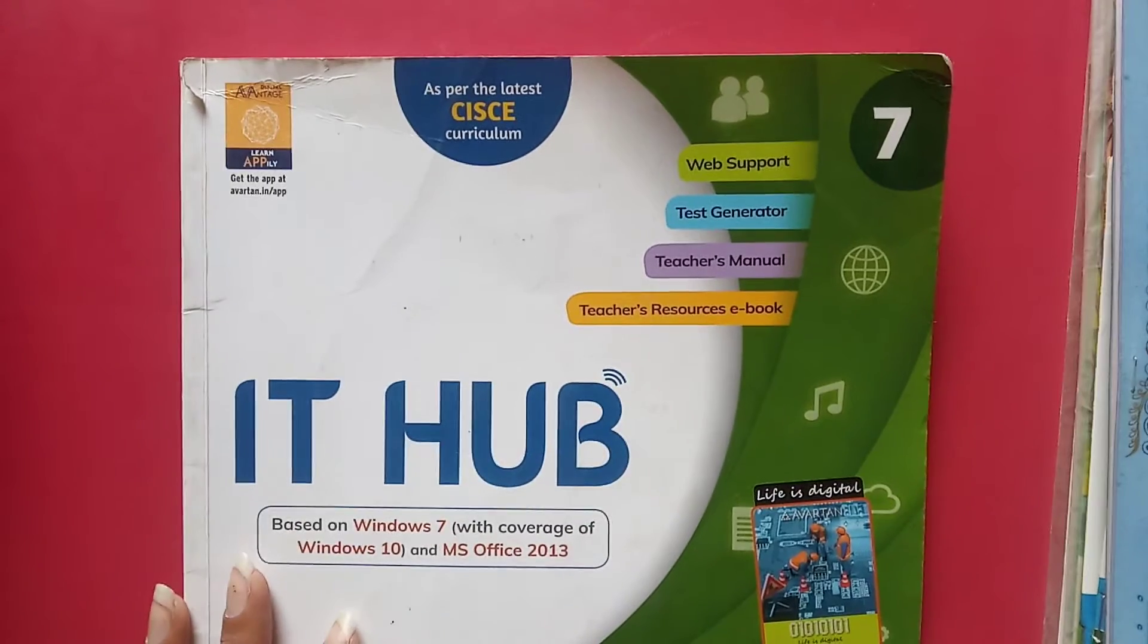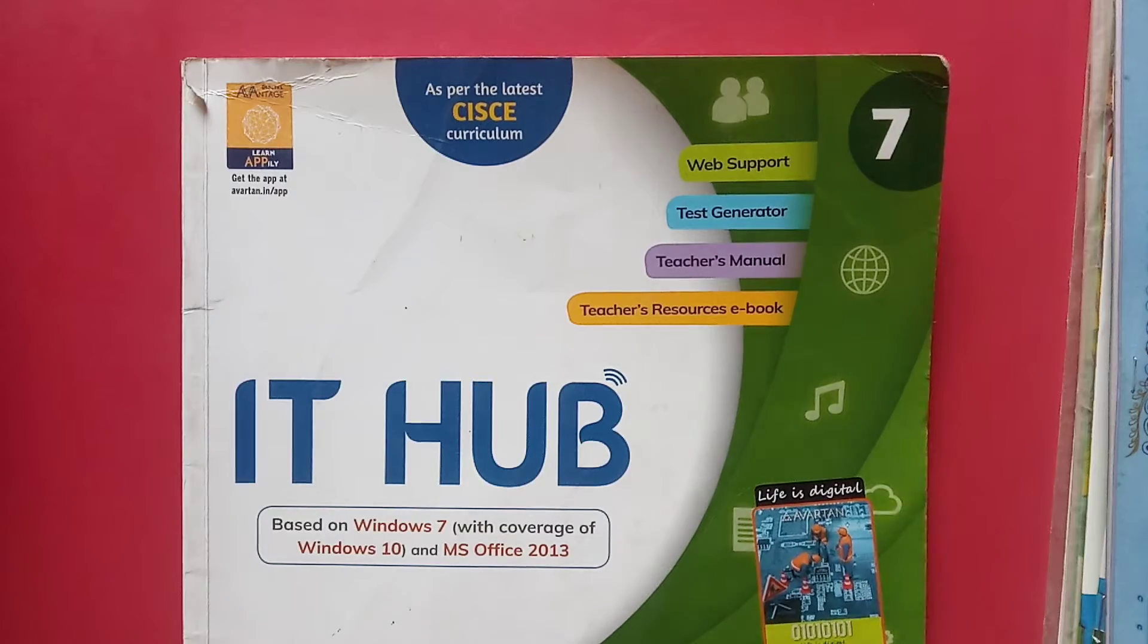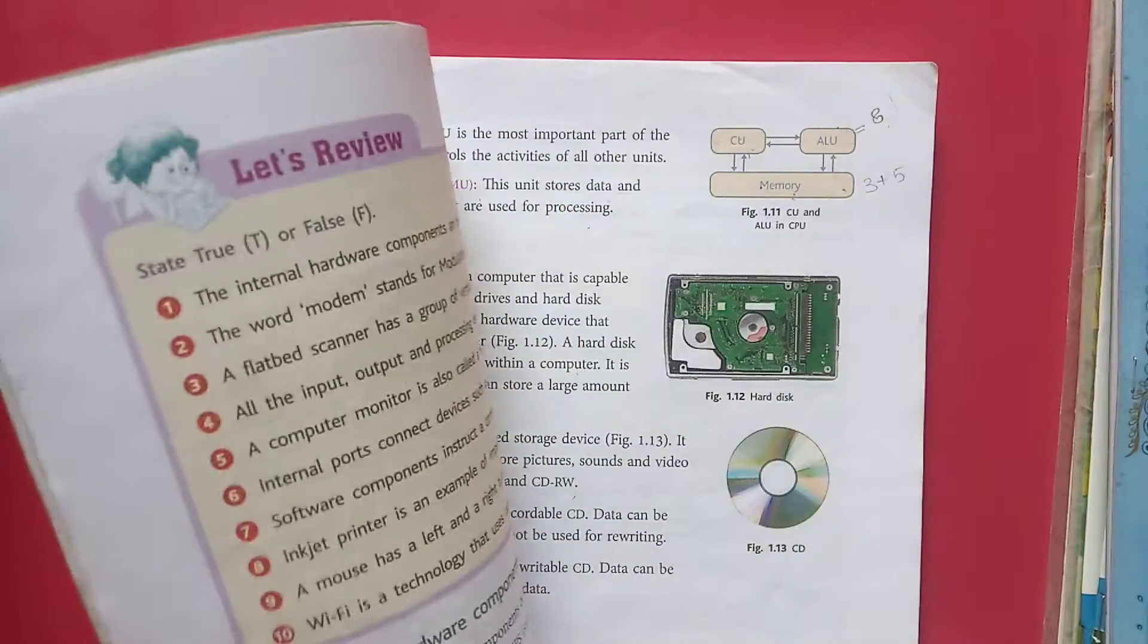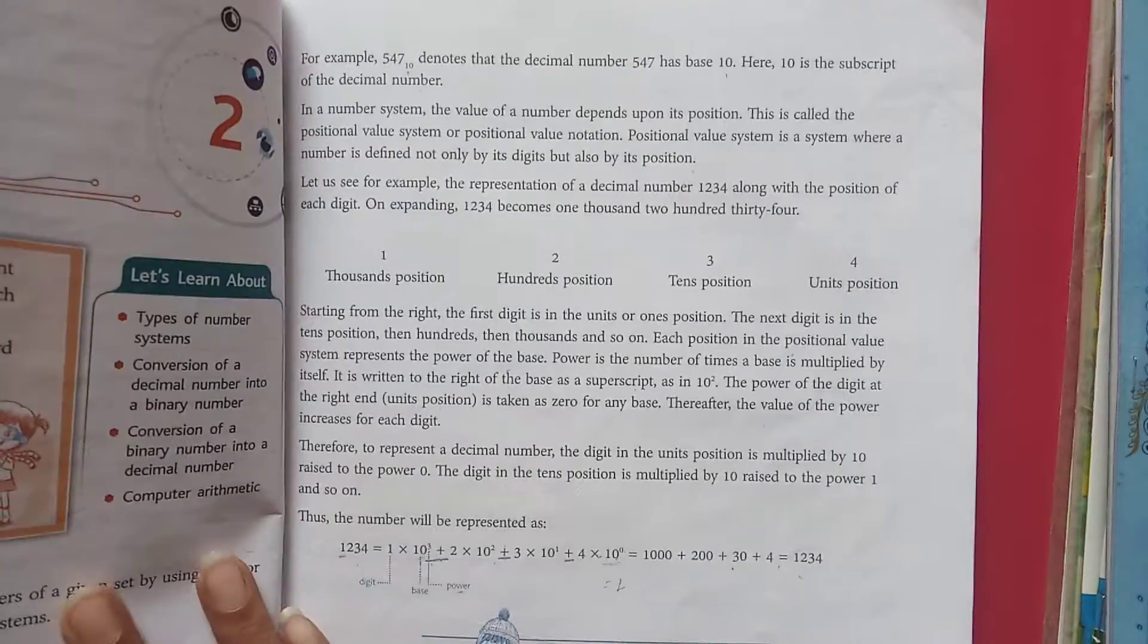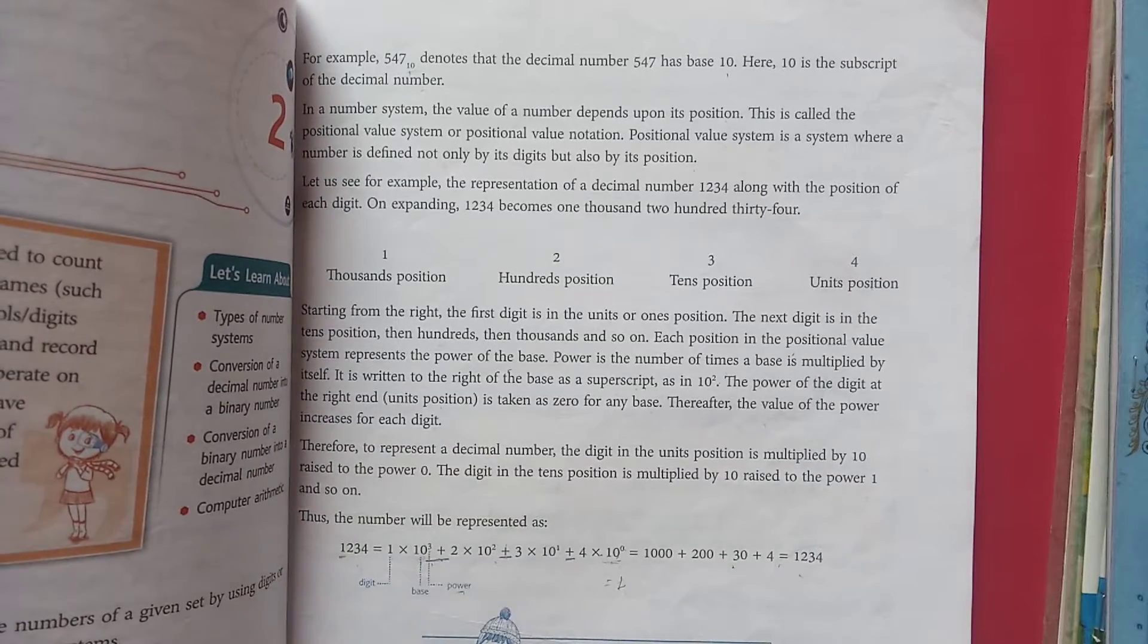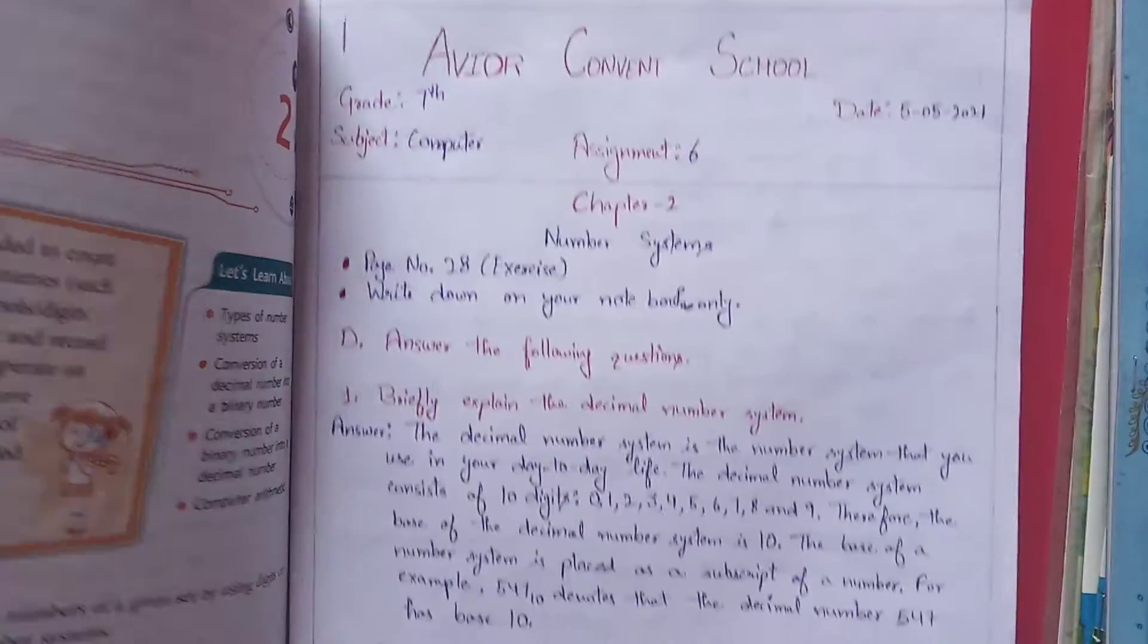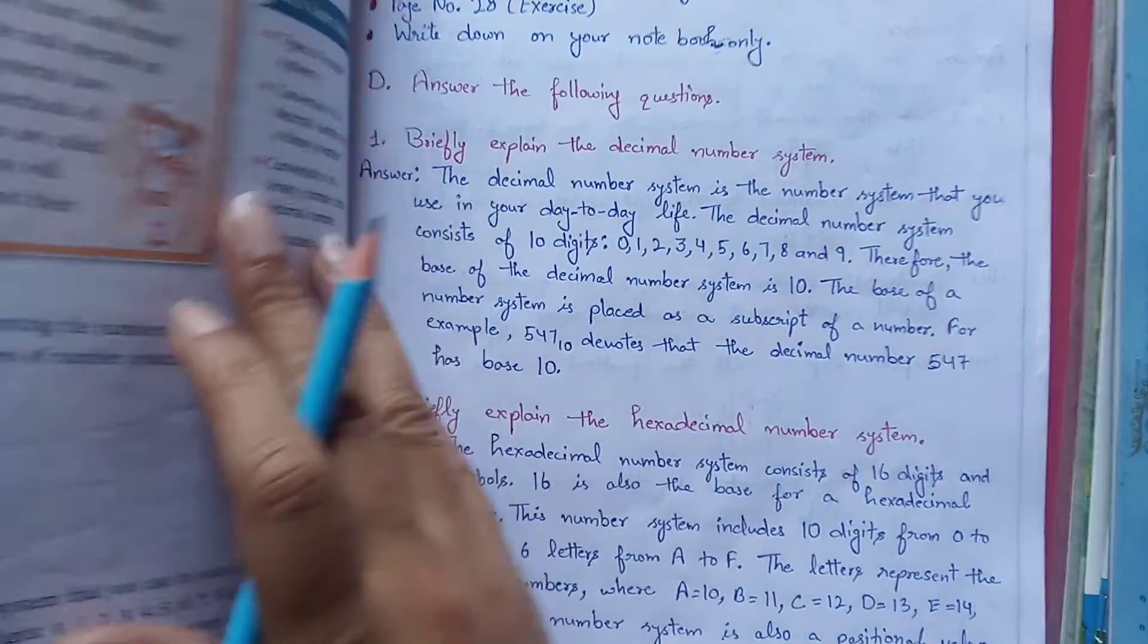So dear 7th class students, we were on our chapter number 2, that is number systems. We have already done our exercises, question answers A, B, C. Now we will move to part D, that is question answers. First is briefly explain the decimal number system.